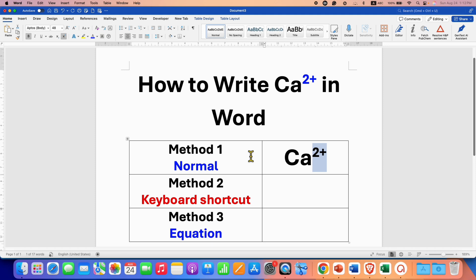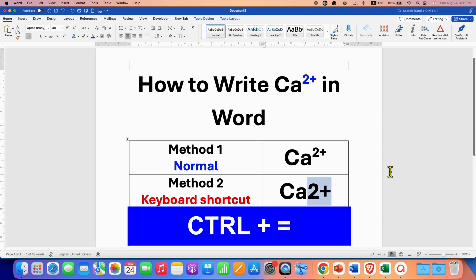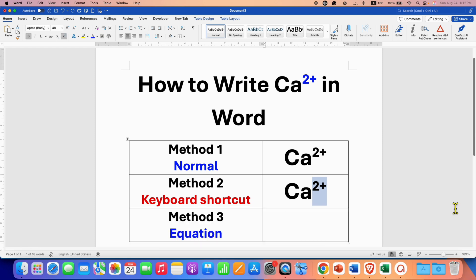Next is the keyboard shortcut. Just type Ca2+. After selecting 2+, press and hold the Ctrl key on your keyboard and press equal to (=) to get the 2+ as superscript.